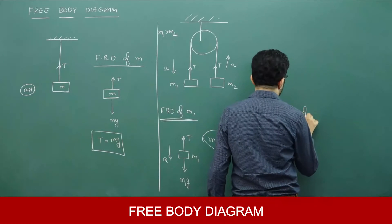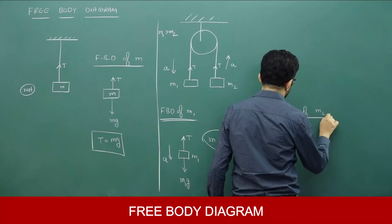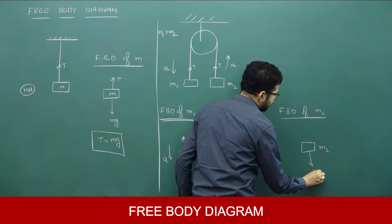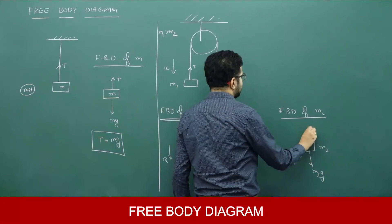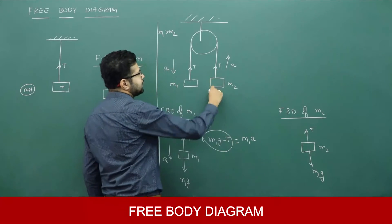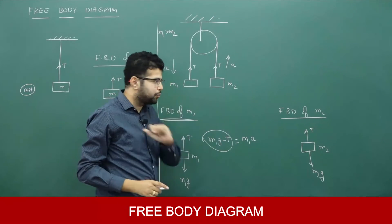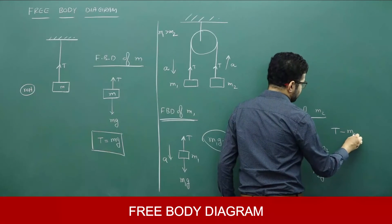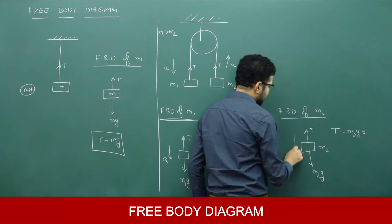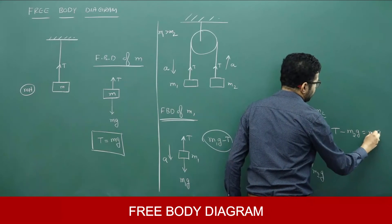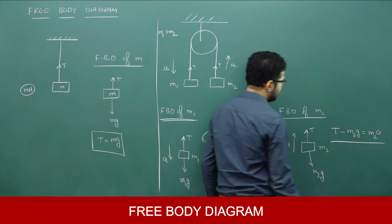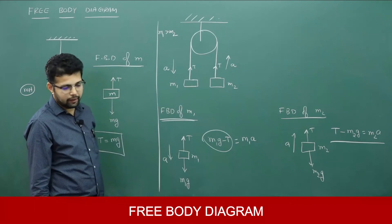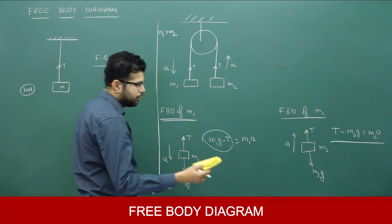Free body diagram of m2: m2g acts downward and tension T acts upward. Since m2 is going up, the upward force should be bigger — tension is greater than m2g. Therefore the equation is: T − m2g = m2 × a. This is how we write the free body diagram in the case of a pulley.